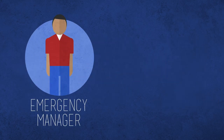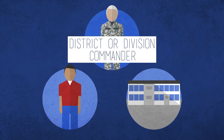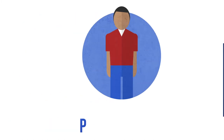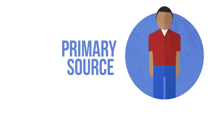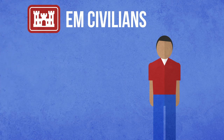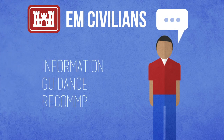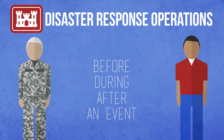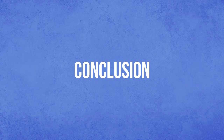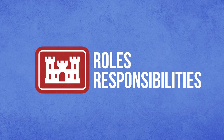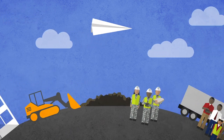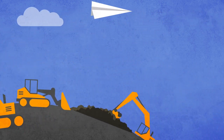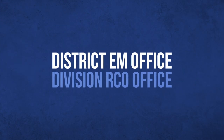The emergency manager or RCO chief and his or her EM or RCO office serve as a district or division commander's advisor and subject matter expert during disaster operations. The civilian professionals in district and division EM and RCO offices have a wealth of knowledge, expertise, and experience. They are your primary source for all things related to USACE disaster operations. USACE EM civilians can answer technical questions and provide information, guidance, and recommendations to command staff and others before, during, and after an event. Be sure to utilize this important resource as you begin to learn about USACE disaster response operations in greater detail. This video provided a rudimentary overview of the roles and responsibilities of USACE during disaster events. Both USACE emergency management and civil disaster operations are intricate, dynamic, and constrained by multiple authorities, laws, and regulations. To learn more about the role of USACE in disaster operations, visit your district EM office or division RCO office and consider watching these additional videos.